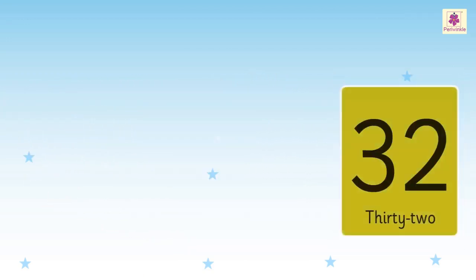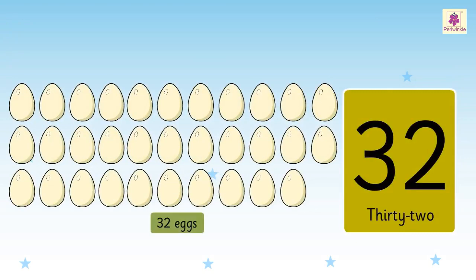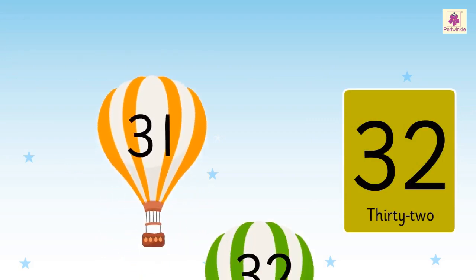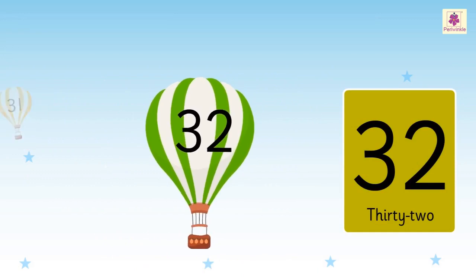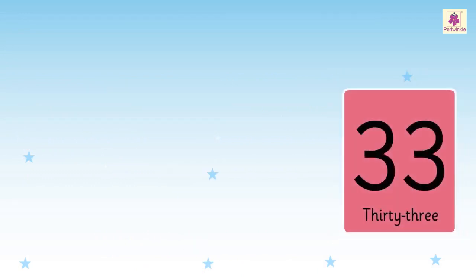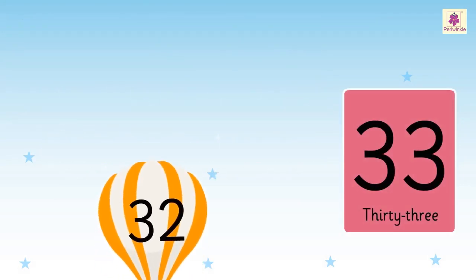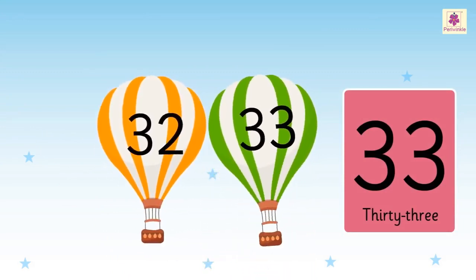Number 32, here we can see 32 eggs. 32 comes after 31. Number 33, here we can see 33 figs. 33 comes after 32.